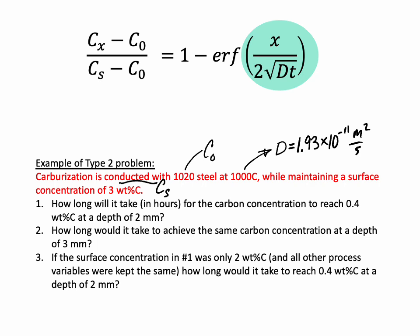I'm given my surface concentration C sub S, so I have all the concentrations. Part one, how long will it take in hours? So there's my unknown. For the carbon concentration to reach 0.4 weight percent carbon, that's C sub X, at a depth of 2 millimeters, that's X. So I have C sub X, C zero, C S, I have the depth X, I know D, and I'm solving for duration time T.